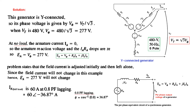The current is 60 ampere at 0.8 power factor lagging. From this we calculate the angle theta = 36.87°. Since it is lagging, we represent it with a minus sign: Ia = 60∠−36.87°.